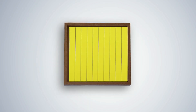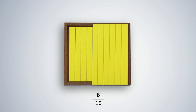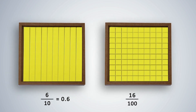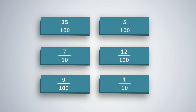Students can now convert decimal fractions to decimal numbers. 6 upon 10 is written as 0.6, and 16 upon 100 is written as 0.16. Here are some more examples for practice. If students understood how to rewrite decimal fractions as decimal numbers, then they are ready for the next step.